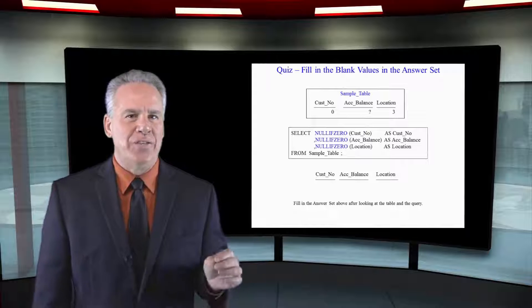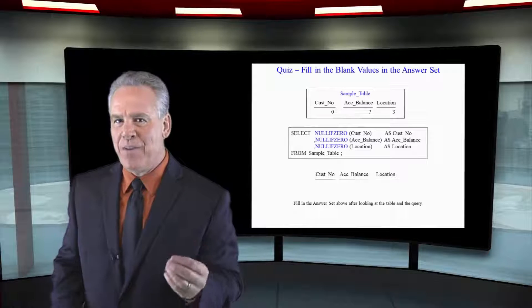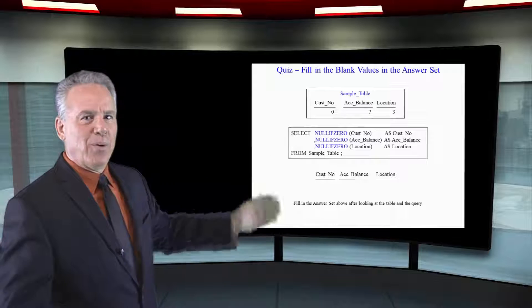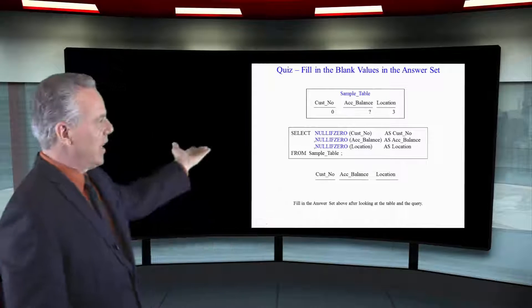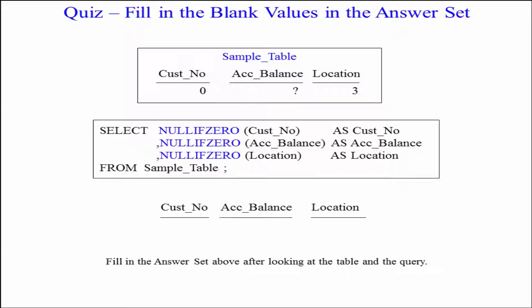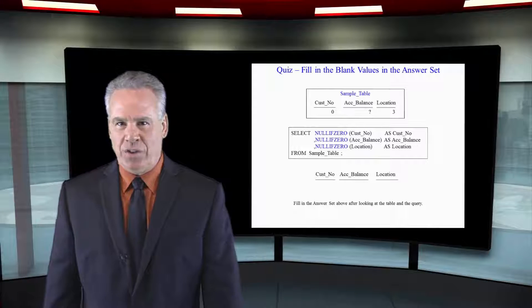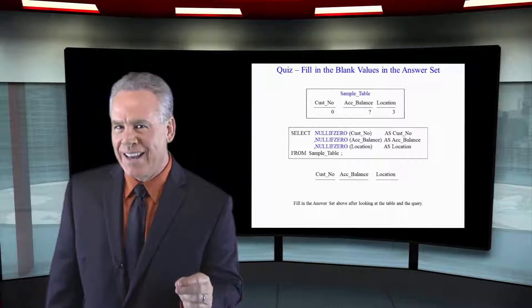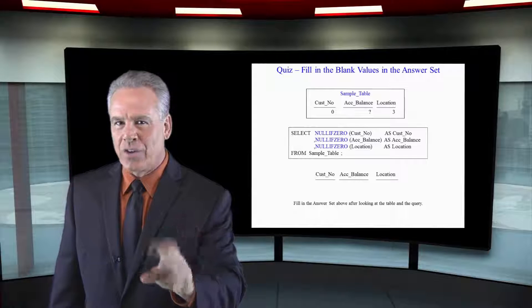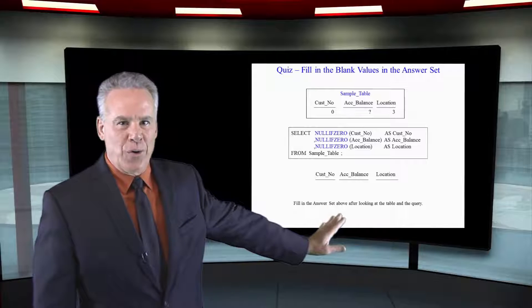Let's see how that NULLIFZERO acts on different types of values. Here you can see another sample table in our minds and it's got a customer number that is zero. It's got an account balance that's got a question mark representing a null value and then it's got a location of 3. Now in our query we're going to select NULLIFZERO, NULLIFZERO, NULLIFZERO on customer number, account balance and location. Take a look at this for about 15 seconds and I want you to answer what you think those results are going to be.